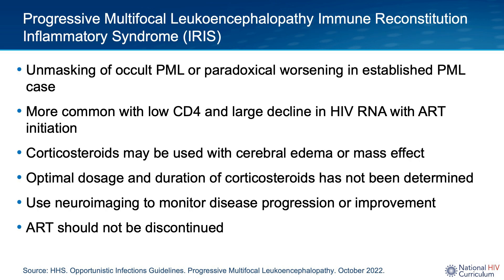There are two types of immune reconstitution inflammatory syndrome, or IRIS, that can occur with PML. The first is unmasking of occult or cryptic PML, where patients may be asymptomatic or have very mild symptoms when ART is initiated. After starting ART and experiencing immune reconstitution, they develop worsened symptoms that unmask the underlying PML diagnosis. This is thought to be due to a restored immune response to JC virus leading to local inflammatory responses.